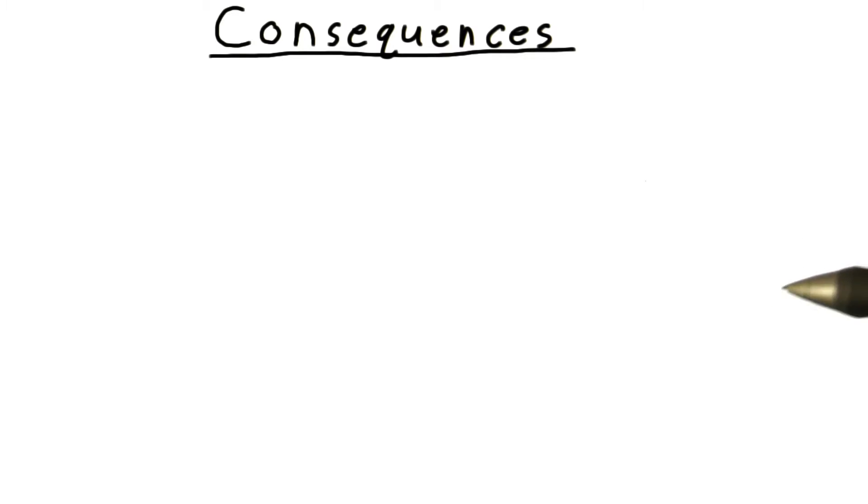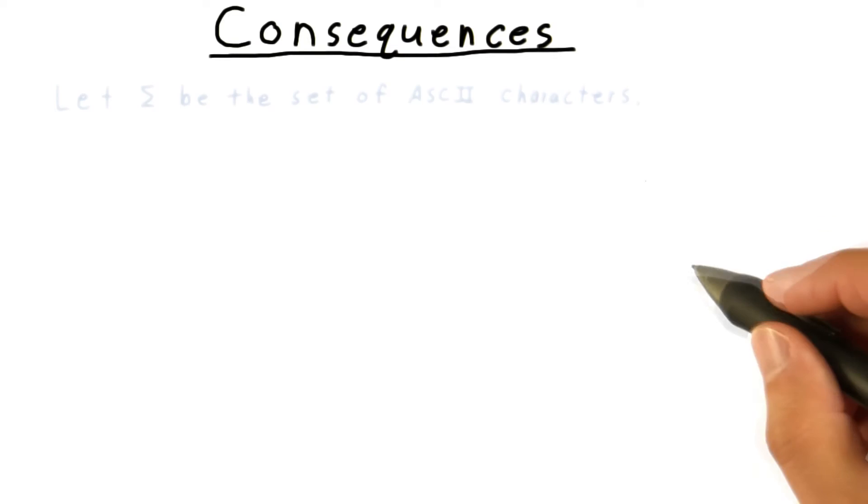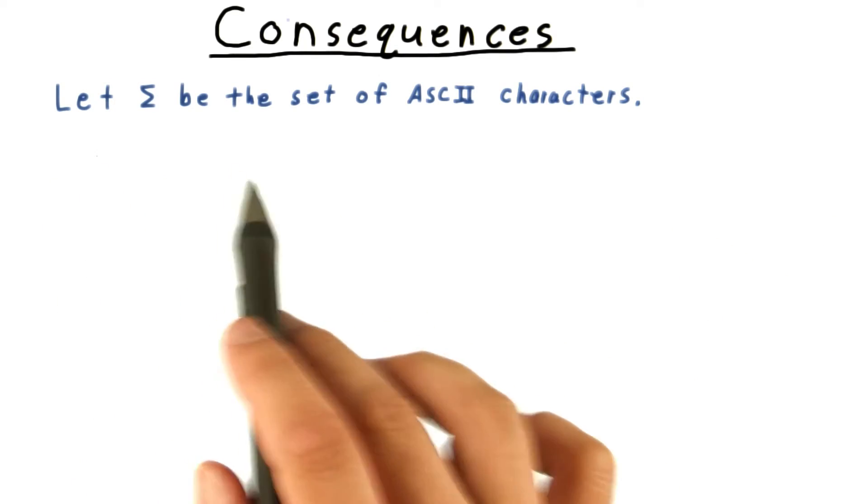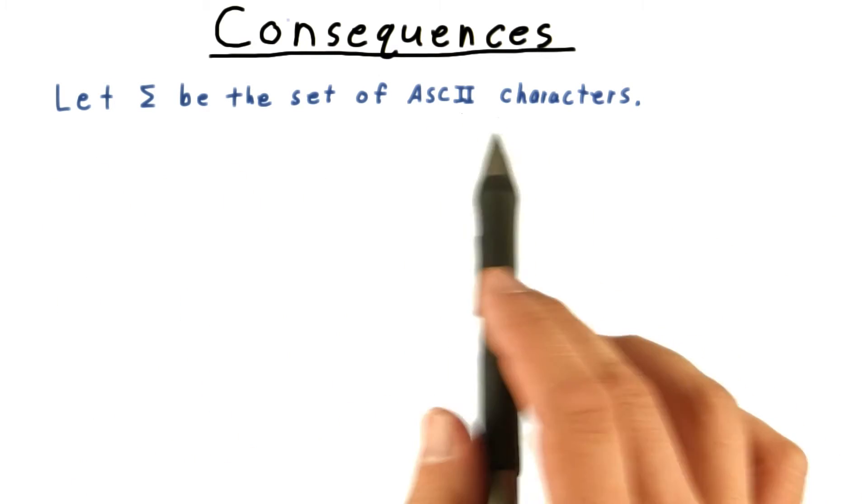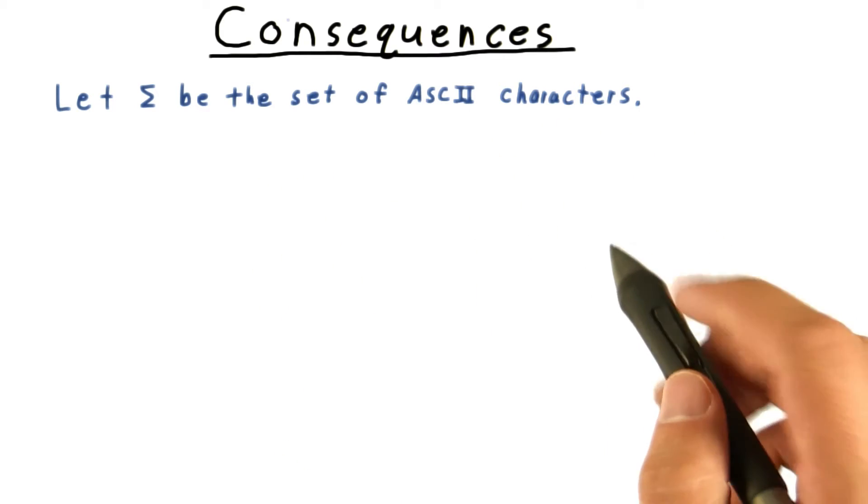Although they may not be immediately apparent, the consequences of the uncountability of languages are rather profound. We'll let sigma be the set of ASCII characters. These are all the ones you would need to write a computer program.